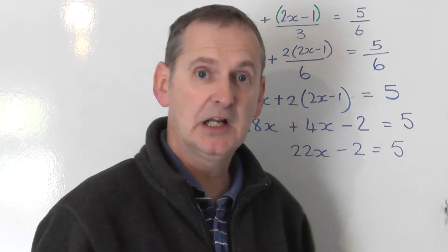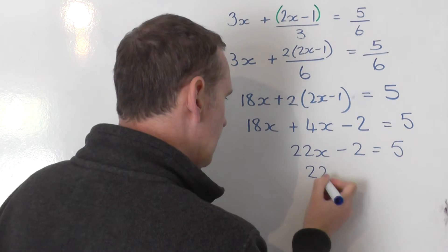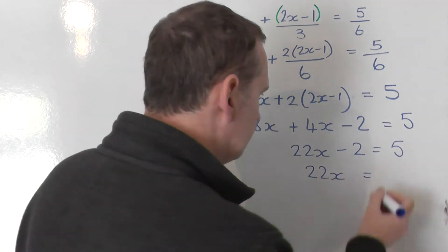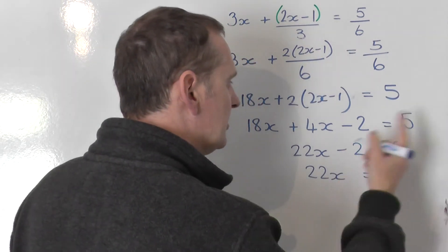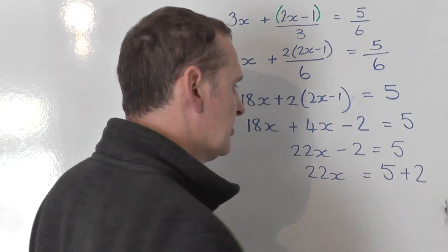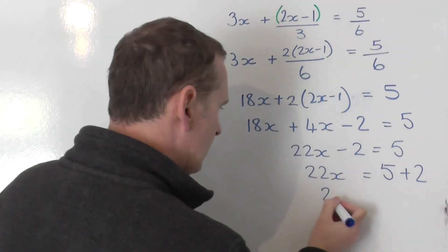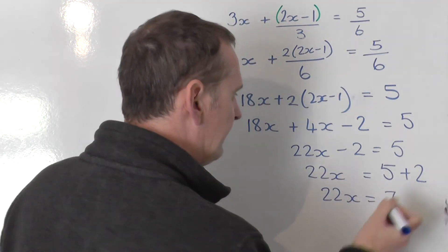So I've tidied up. There's only x's on the left, so I'm going to collect them on the left - 22 x's on the left. And I'm going to take the numbers to the right. Well, the 5 is already where I want it. Leave it alone. The minus 2, take it over, becomes a plus 2. Let's tidy up on the right-hand side. So you get 22x is equal to 7 on the right.